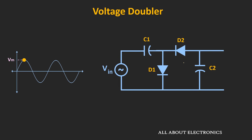Initially, we will assume that all the capacitors are uncharged. During the positive half cycle, the polarity of the input voltage causes diode D1 to turn ON and diode D2 to turn OFF. During the positive half cycle, the anode of diode D1 is more positive than the cathode. For diode D2, the anode is at ground potential while the cathode has the input voltage Vin applied, so D2 remains OFF.